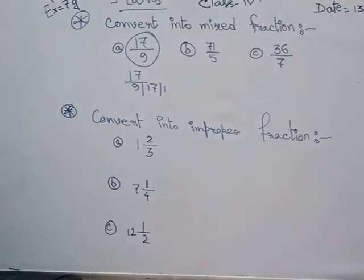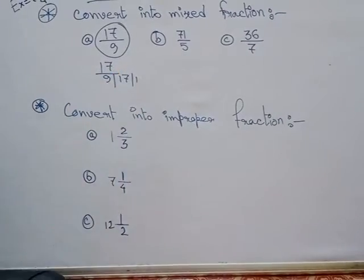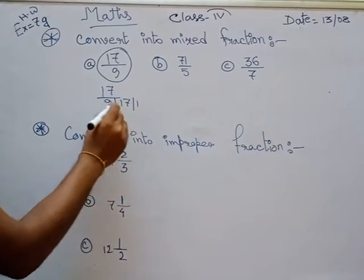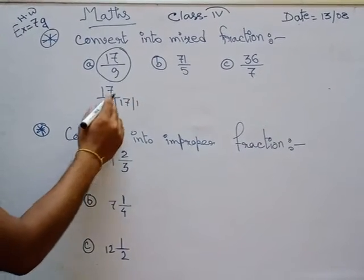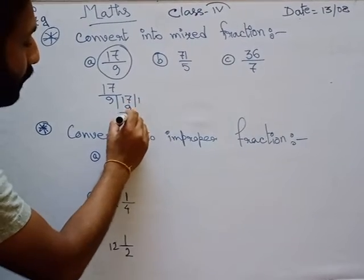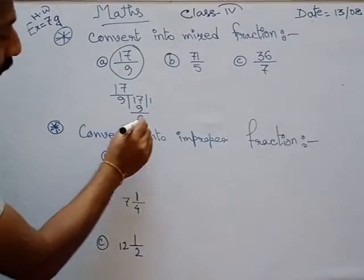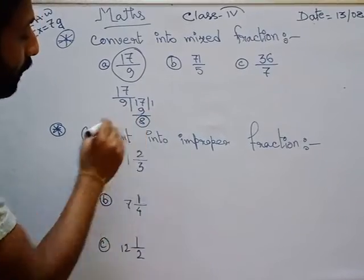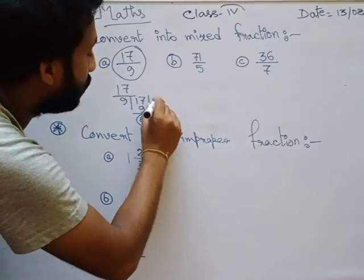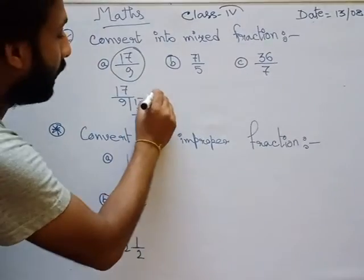At first, 9 — 2 nines are 18, here is 17, so 17 is less than 18, so we are taking 1 time: 1 time of 9, nine 1s are 9. Here is 8 left. If the remainder is 8, we should write here 8.